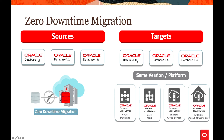In terms of supported platforms, any database running 11g, 12c, or 18c can be migrated using the Zero Downtime Migration utility to target platforms such as virtual machines, bare metal cloud services, or Exadata Cloud at Customer.